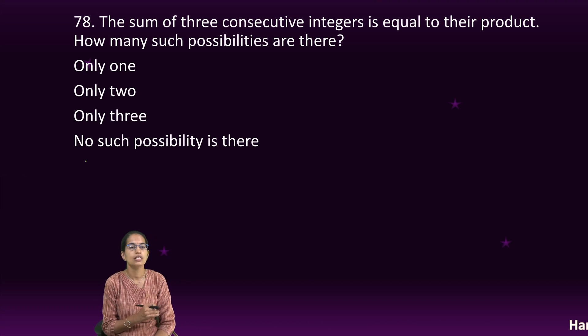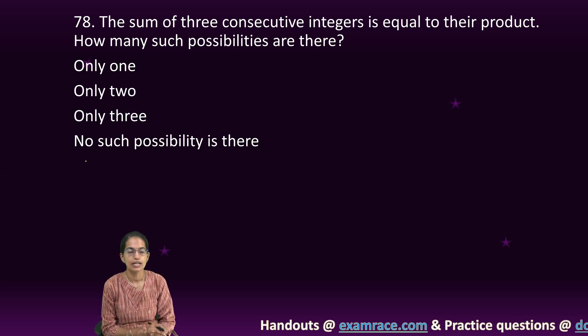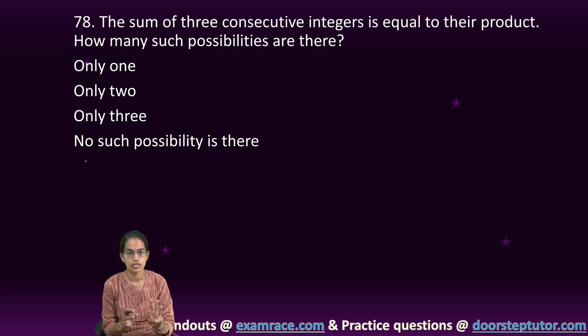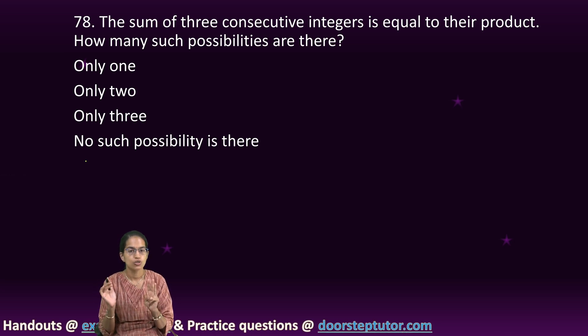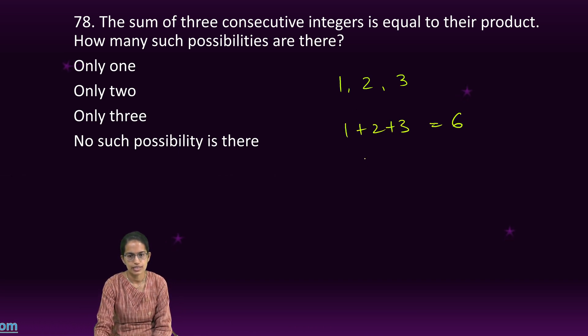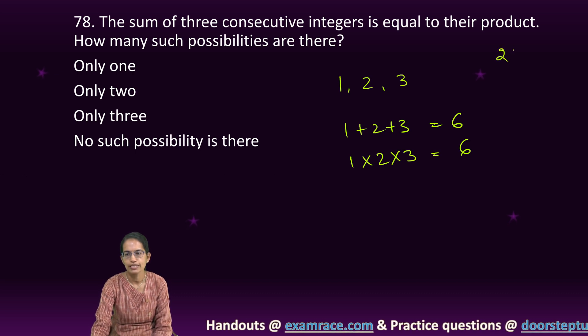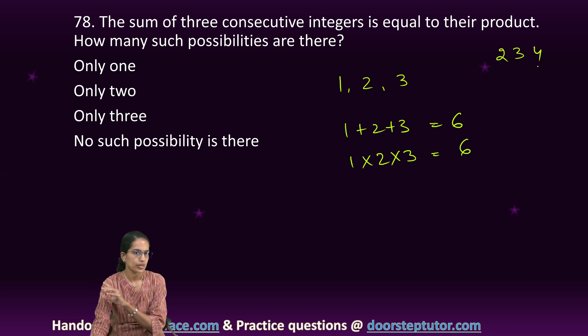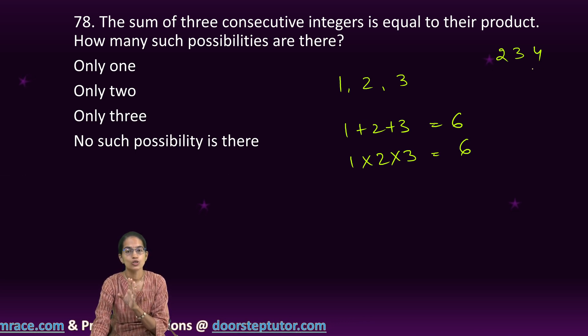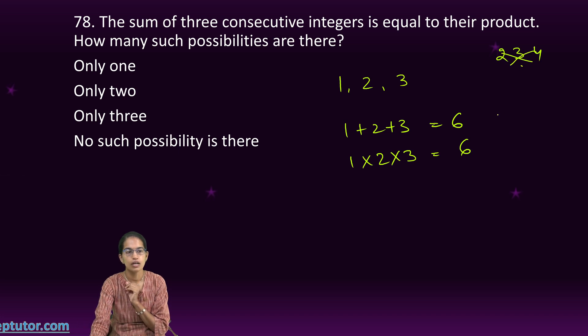Very important question. The sum of 3 consecutive integers is equal to their product. The quickest way is 1, 2, 3. I add 1 plus 2 plus 3, I get 6. I multiply 1 into 2 into 3, I get 6. The sum equals their product. As soon as I increase the digits, things turn out bad. This cannot be the only option.